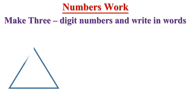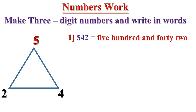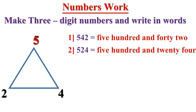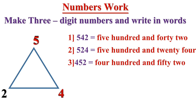Look at the triangles. The numbers are 5, 4, and 2. First, using 500 as the hundreds digit, I make the number 542, and another number is 524. Second, using 400, the number is 452.